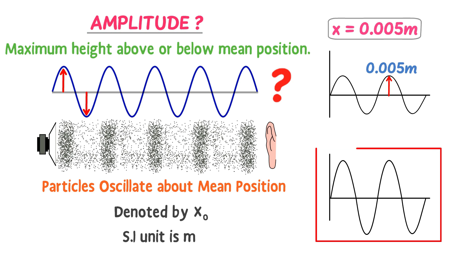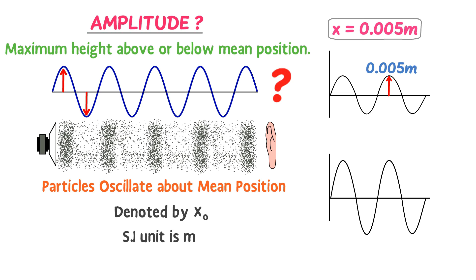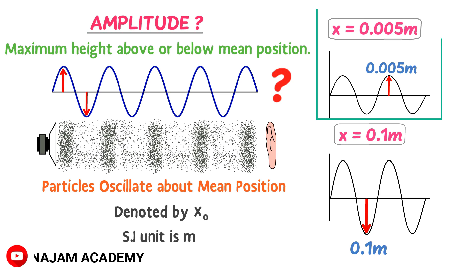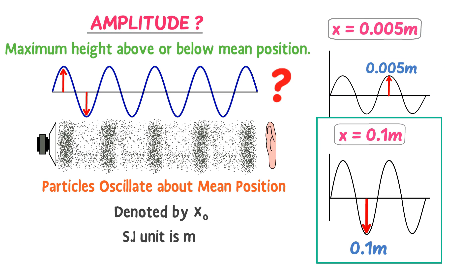Similarly, in this wave, to find its amplitude, we measure the length of this peak point from the mean position. Let's suppose that the length of this peak point from the mean position is 0.1 meter. So the amplitude of this wave is x = 0.1 meter. Thus we can state that the amplitude of the first wave is smaller than the amplitude of this wave.